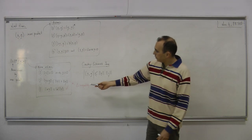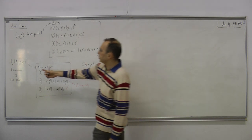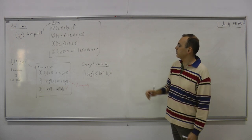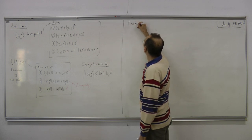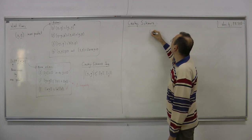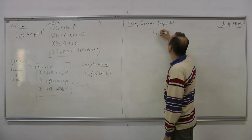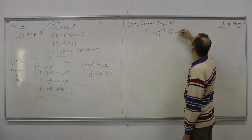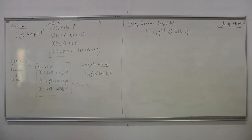Before checking the triangle inequality for this induced norm, we need to introduce another important concept: the Cauchy-Schwarz inequality. We need to show that the inner product of x and y is less than or equal to the norm of x times the norm of y, for all vectors x and y.